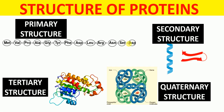Hello everyone. In this lecture today, I'm going to talk to you about the structure of proteins. Protein structure has been divided into four different types: primary structure, secondary structure, tertiary structure, and quaternary structure.